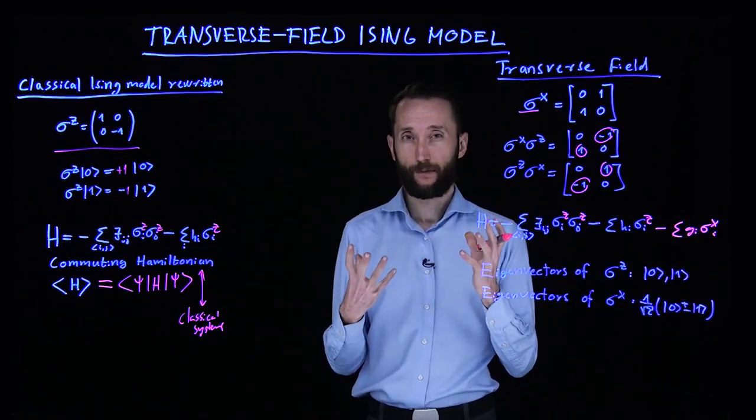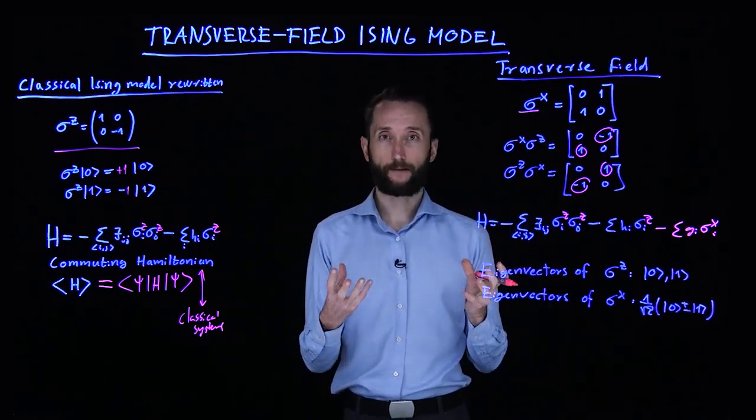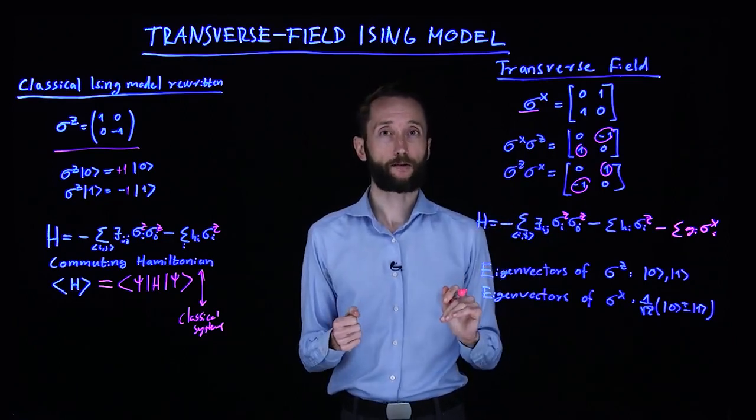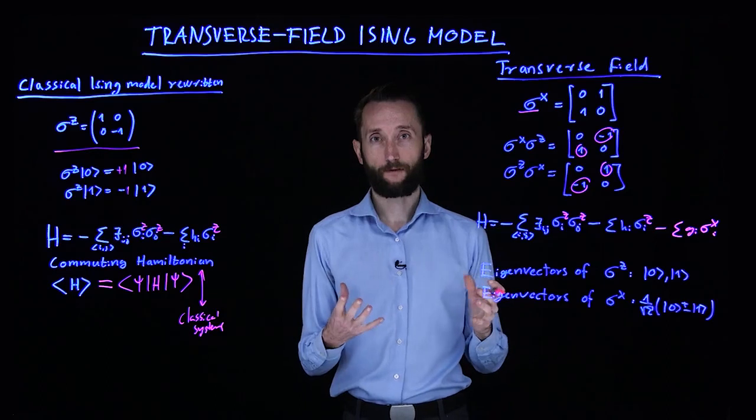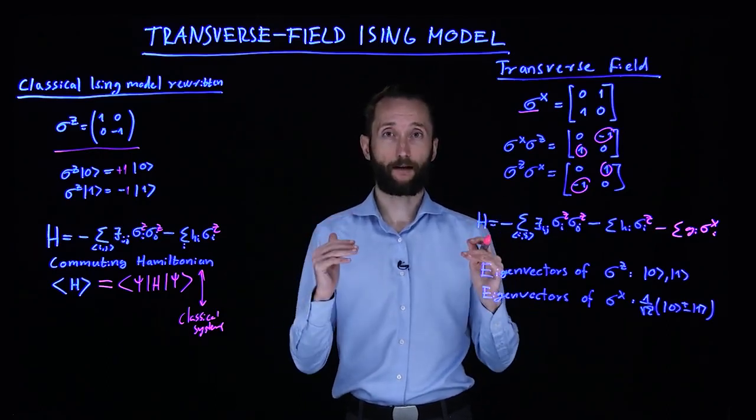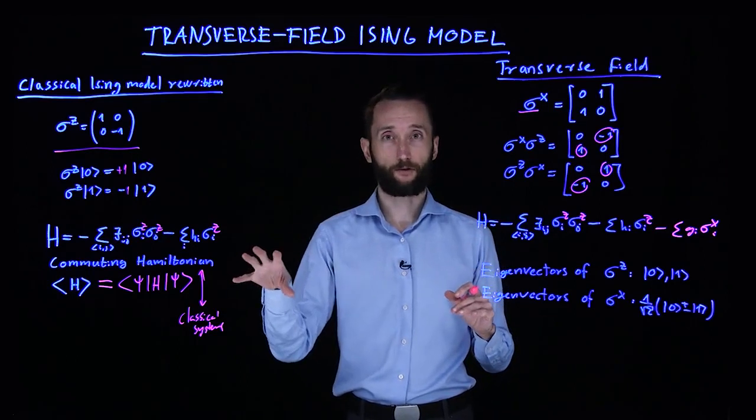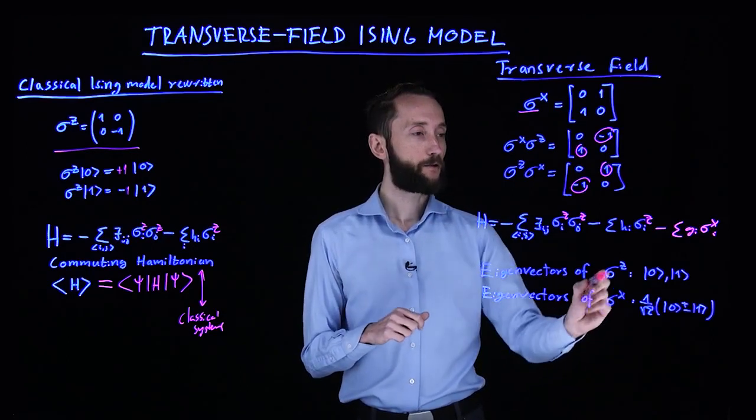What does this mean that you have a transverse field? To understand this, we have to look at the eigenvectors of the individual operators. The eigenvalue of this operator will correspond to the energy, so the lowest eigenvalue will correspond to the lowest energy for that particular operator in that site.